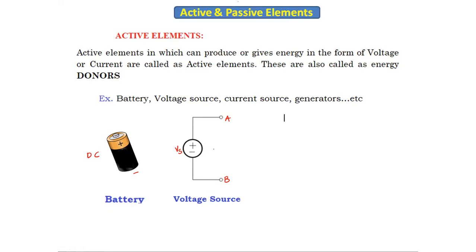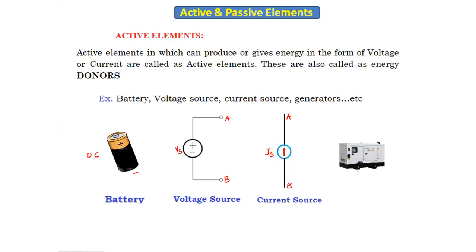This is the symbol of the current source, also having two terminals — terminal A and terminal B. It is indicated by Is (current source). It supplies current, that's why it is called a current source. The generator is another active element used to give energy — we use it for backup purposes when power is off.